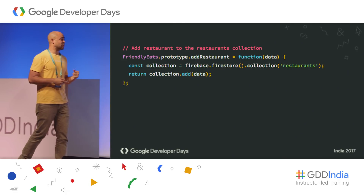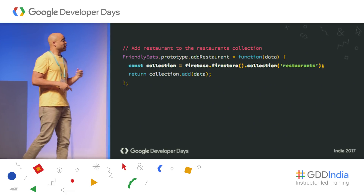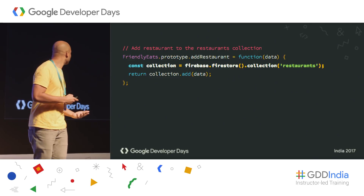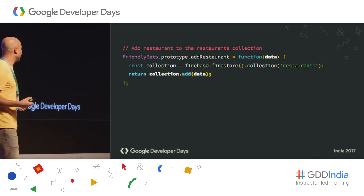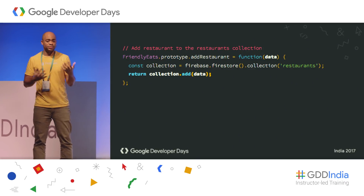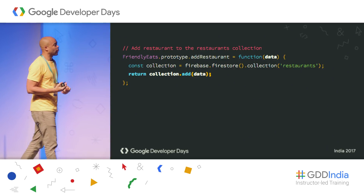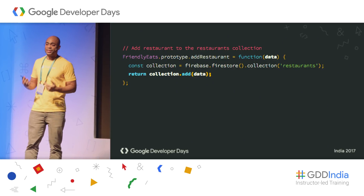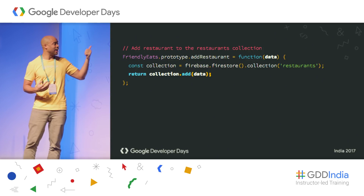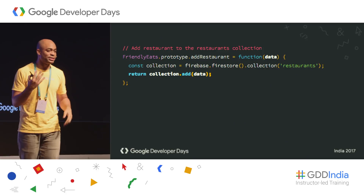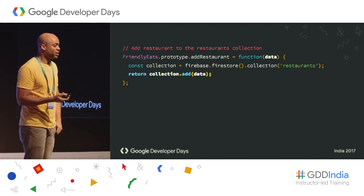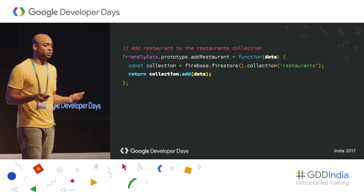To add restaurants, we get a reference to the restaurants collection and then simply call add. We're adding a data object — any JavaScript object in this case. You don't have to explicitly create a document; you simply have an object, you add it, and the document is created implicitly. The data object will be a restaurant with all of the restaurant fields filled in.